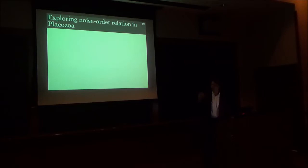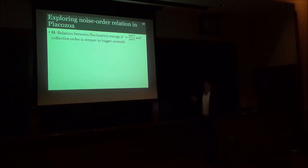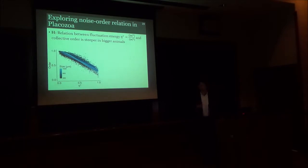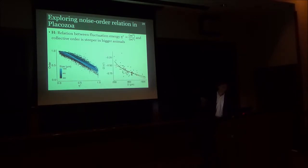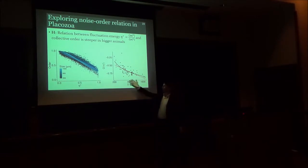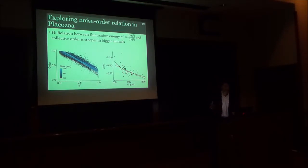So now that we have this extracted, I was expecting that this noise, this energy that's a proxy for noise, will have a steeper relationship with the collective order in larger animals. And what I find is, in fact, just such a relation. Here I have the linear fits for all the different animals in different sizes. And if you plot their slopes against the size, you see this decay whereby bigger animals have more negative or steeper relationships. So this is another sort of signature that we can look for that's a bit more subtle.